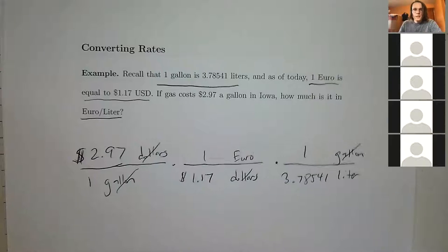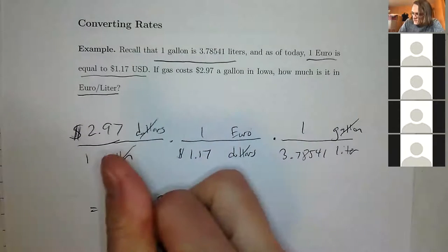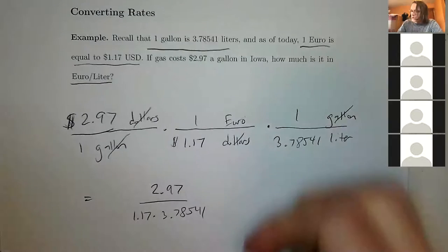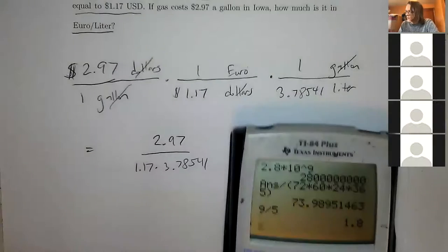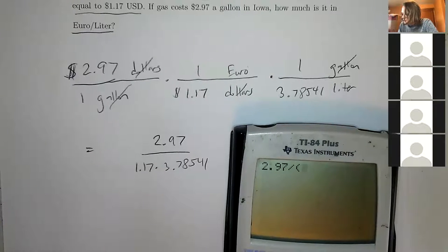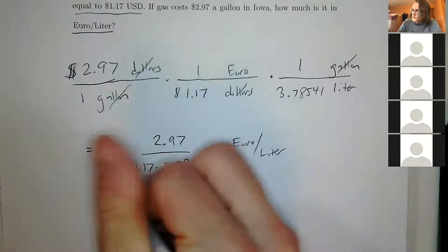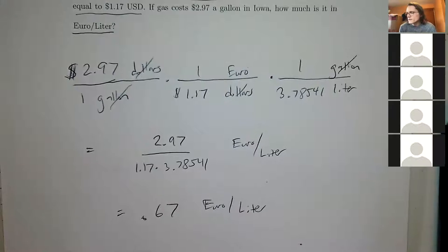Compute: numerator is 2.97, denominator is 1.17 × 3.78541. Calculate: 2.97 ÷ (1.17 × 3.78541) ≈ €0.67 per liter. It seems small because there are almost 4 liters in a gallon, so you're paying less per liter. The dollar-euro exchange rate is close to 1:1.